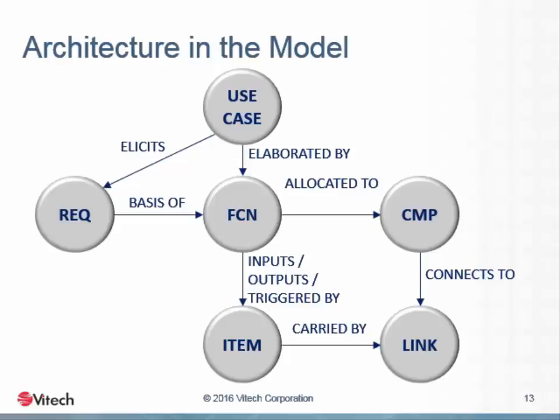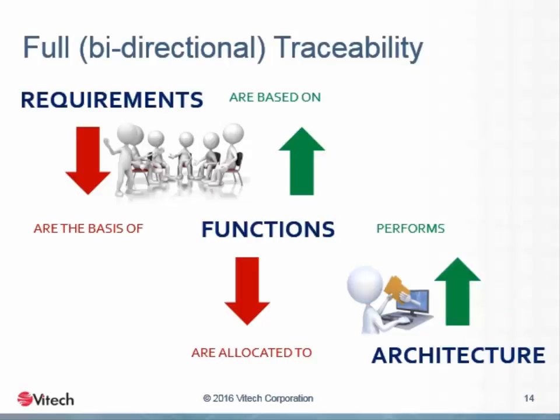Having allocated all of the functions to the components that will perform them completes the design and provides full traceability from the requirements through the logical and physical architectures. We can formalize the relationships between the behavior and the architecture. This provides what we know as bi-directional traceability: every requirement is fulfilled by a behavior that is performed by a component, and every component performs a behavior that's based on a requirement. There are no unfulfilled requirements, nor are there any unjustified components.